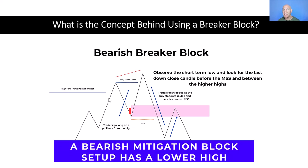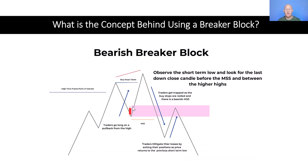You'll note this is very similar to our mitigation block setup. The only difference in a mitigation block is that the subsequent push doesn't actually take out the previous high — it's actually lower. But going back to our bearish breaker block, that's why this setup works: we have our last down close candle in the swing low between the two higher highs prior to the market structure shift.